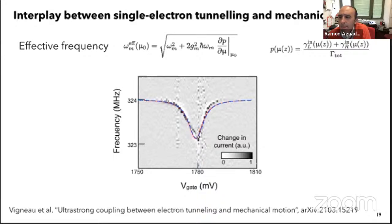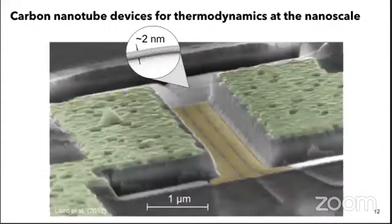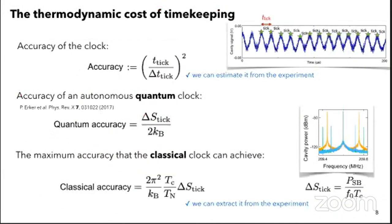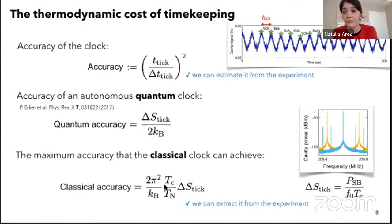There is another question from Clivia Sotomayor. Thank you for the really exciting talk, Natalia. My question is about the first part, the classical and quantum clock accuracy — specifically how you measure the temperature. We don't measure the temperature directly. We know the noise temperature from our electronics — we plug in the room temperature of the circuit and calculate the noise of our circuit. Measuring the temperature of the mechanical mode directly would be very tricky.